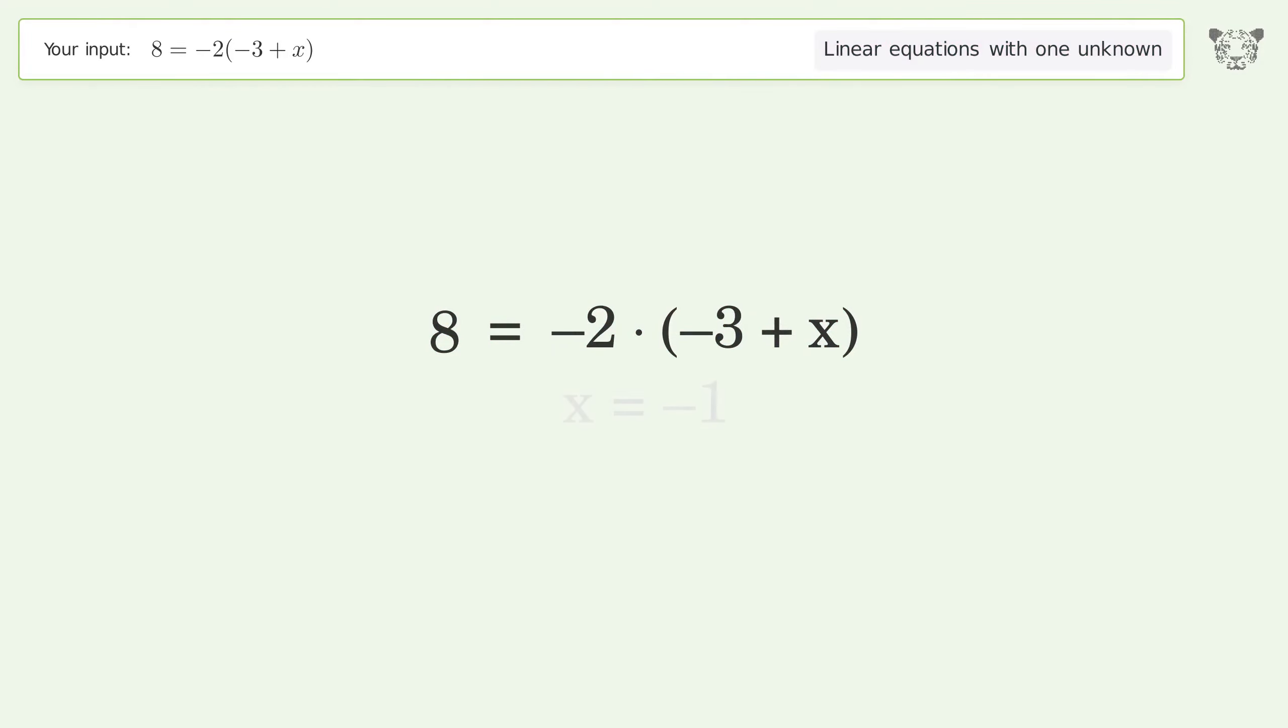You asked Tiger to solve this. This deals with linear equations with one unknown. The final result is x equals negative one. Let's solve it step by step. Simplify the expression.